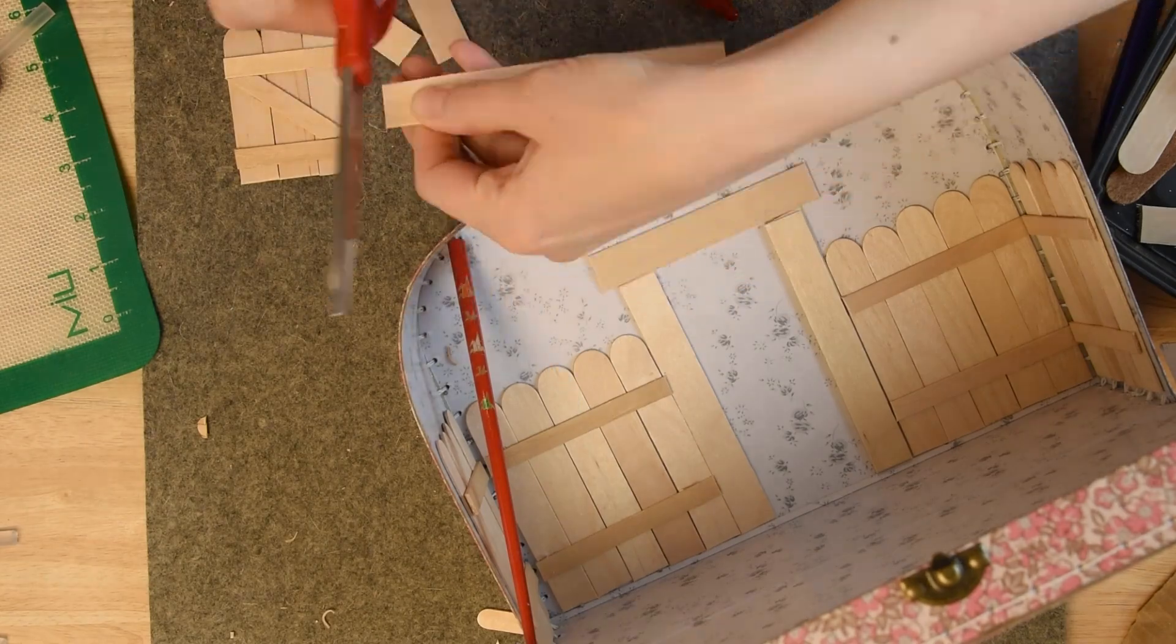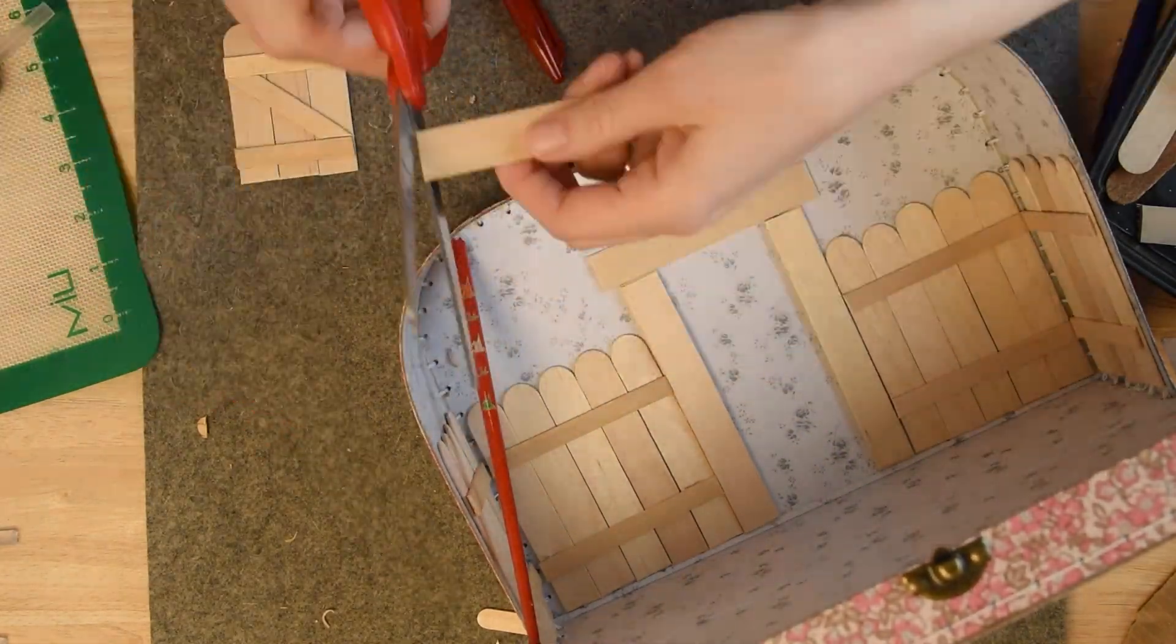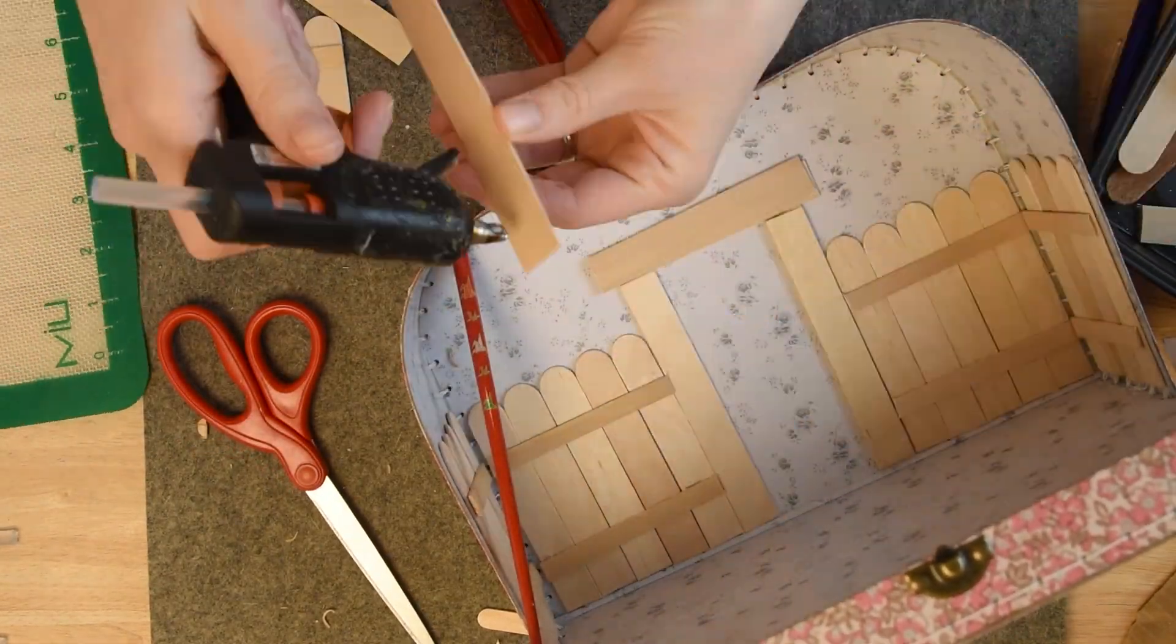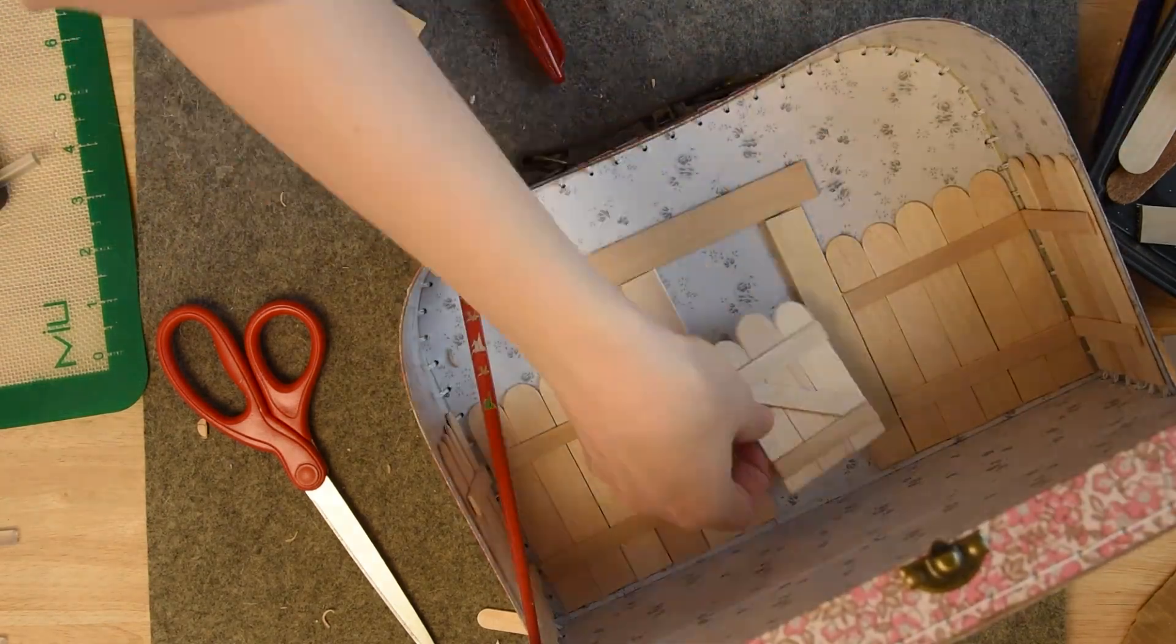I'm doubling up the popsicle sticks on the gate just to give it a little bit of depth to make it look a little bit thicker. Obviously if I had thicker wood I could have just used that, but I just had these popsicle sticks.